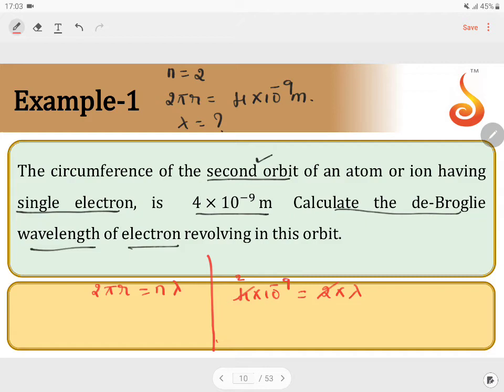2 ones are 2, 2s are 4, therefore the answer is lambda is equal to 2 into 10 to the power of minus 9 meters. This is how we can calculate the de Broglie wavelength.